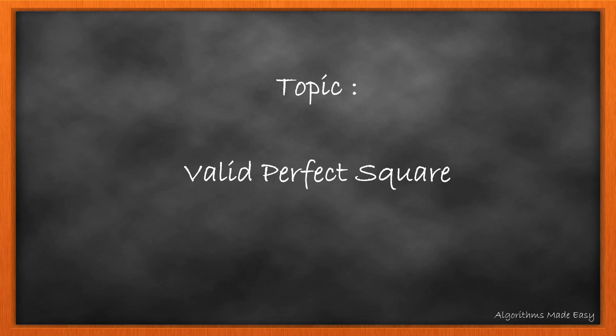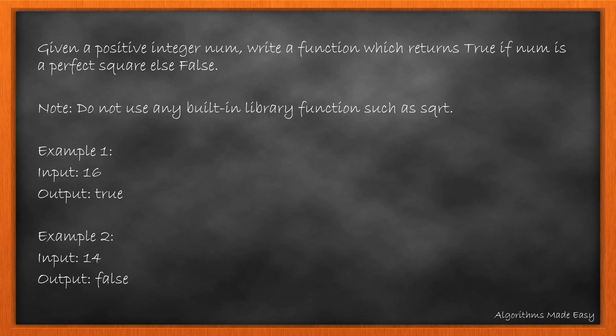Hello guys, welcome back to Algorithms Made Easy. We will now go through the day 9 problem from the May LeetCode challenge. Given a positive integer num, write a function which returns true if num is a perfect square, else false.